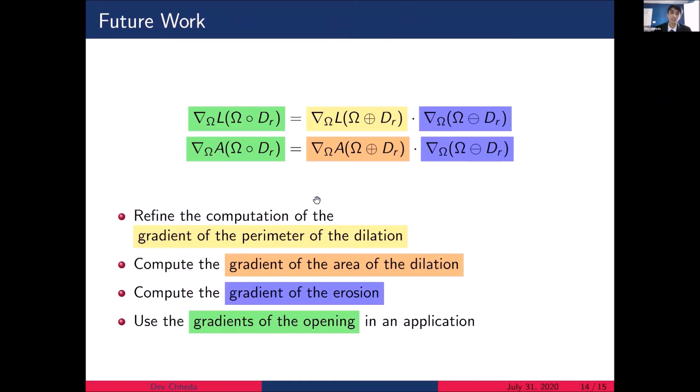In the future, we would like to refine the computation of the gradient of the perimeter of the dilation. We also still need to compute the gradient of the area of the dilation and the gradient of the erosion in order to find the gradients of the opening. And after that, we would want to use the gradients of the opening in some application. And this could involve many things. One example is to use this to denoise a shape using the gradient of the opening, or to reconstruct a shape from its morphological opening bound.